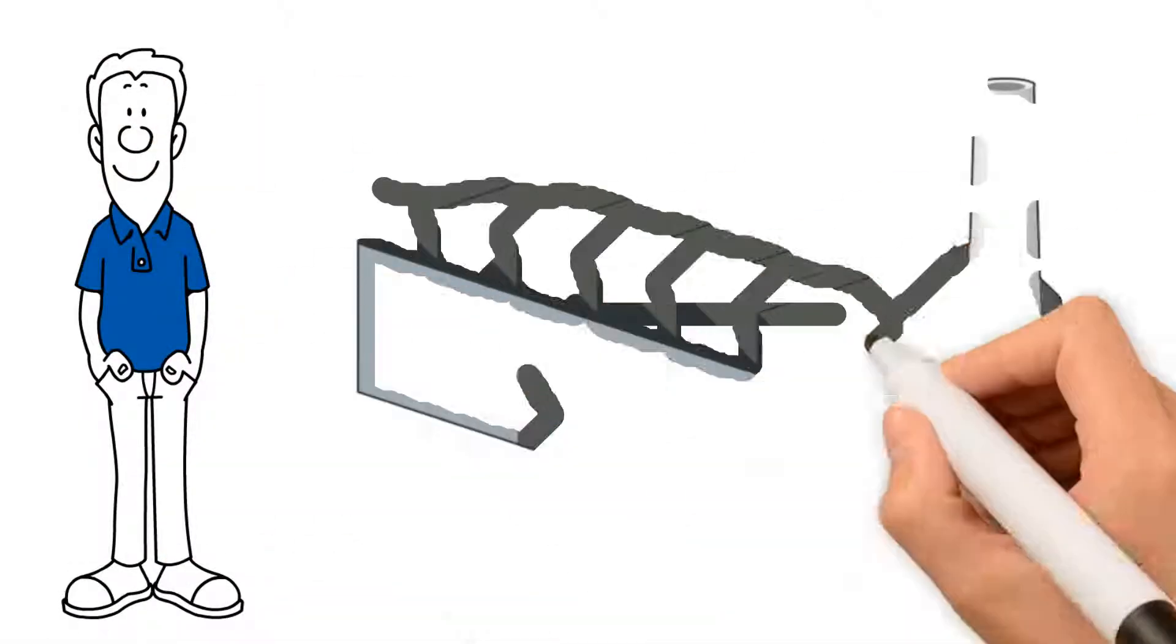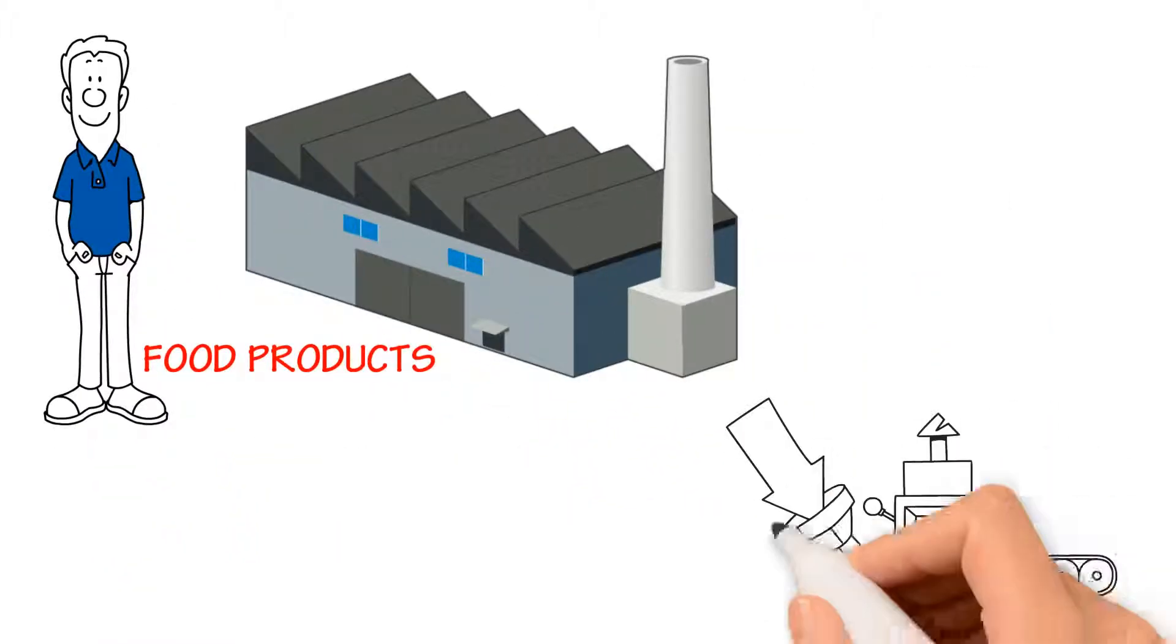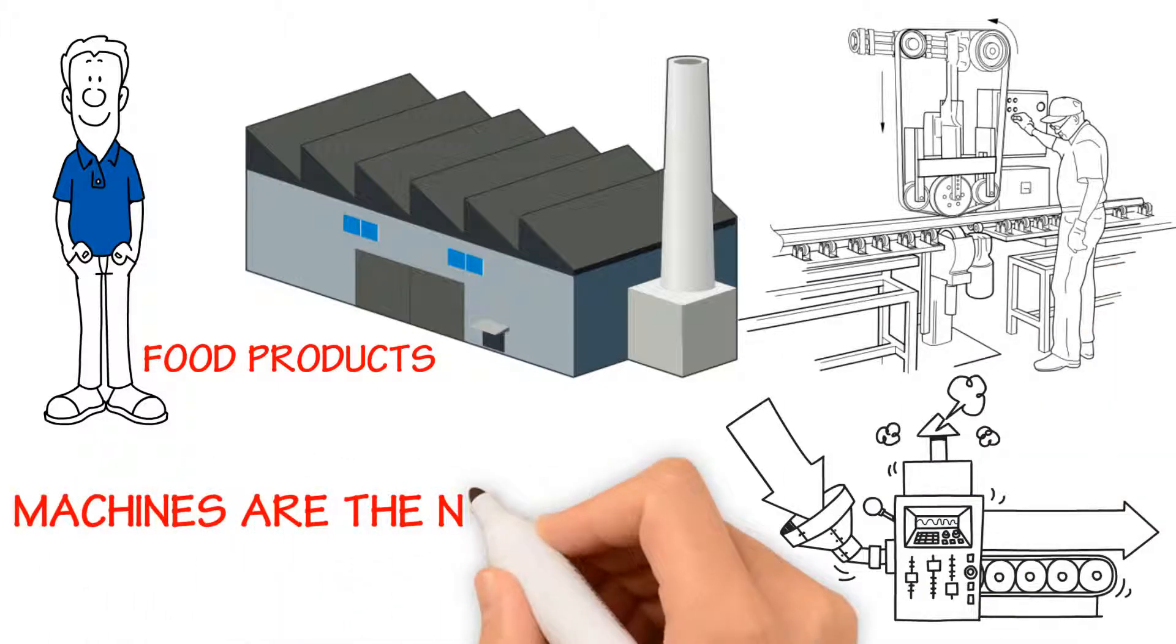Dave owns a factory. He makes food products for his customers. Dave's team uses machines to make his products. Dave's machines are the nerve center to his business.